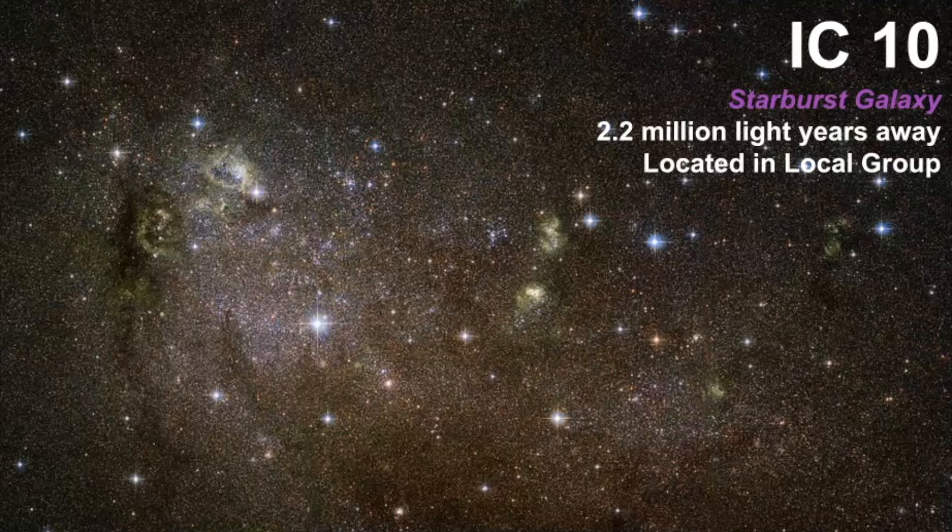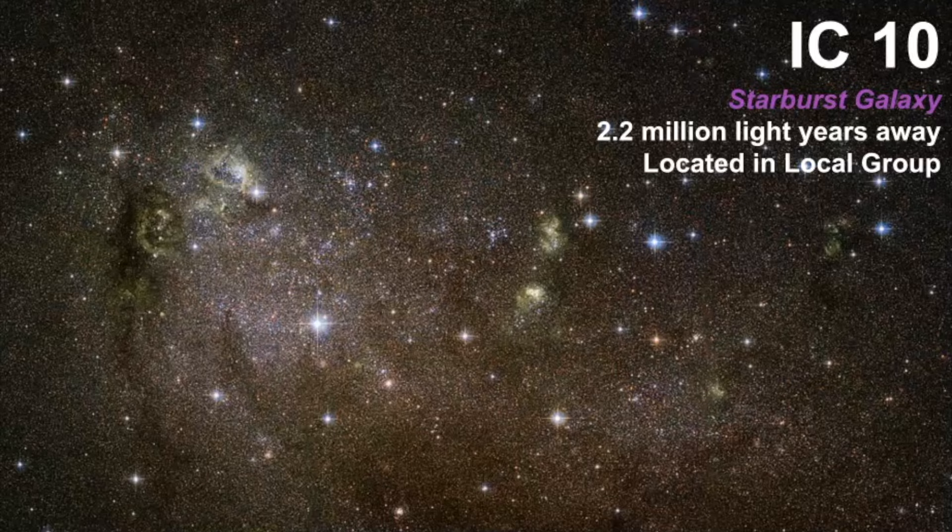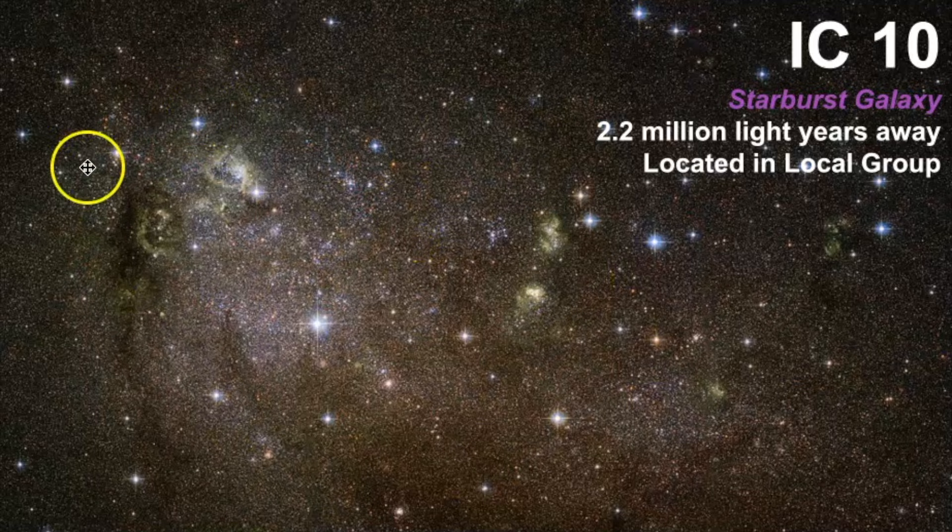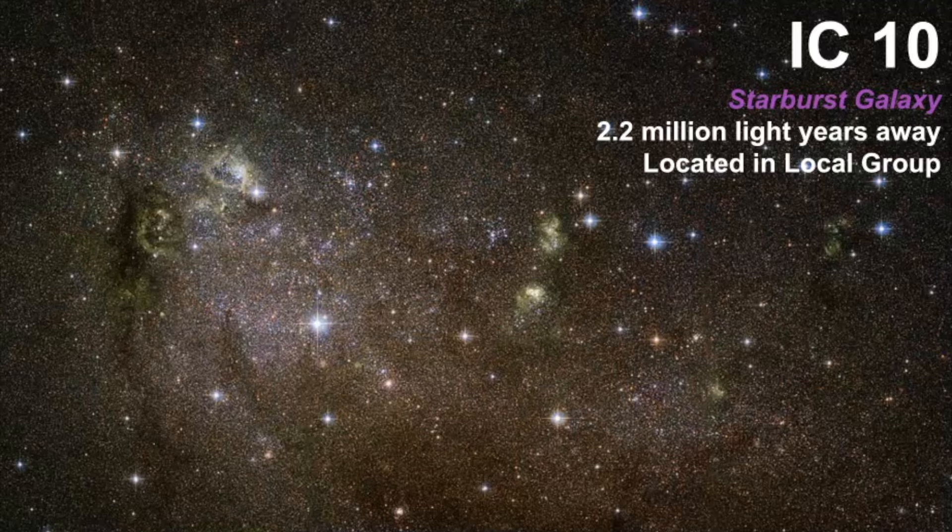Another example of a starburst galaxy include IC10. This one is close to us at only 2.2 million light years away. It's located in our own local group. Again, we just see higher rates of star formation in starburst galaxies.